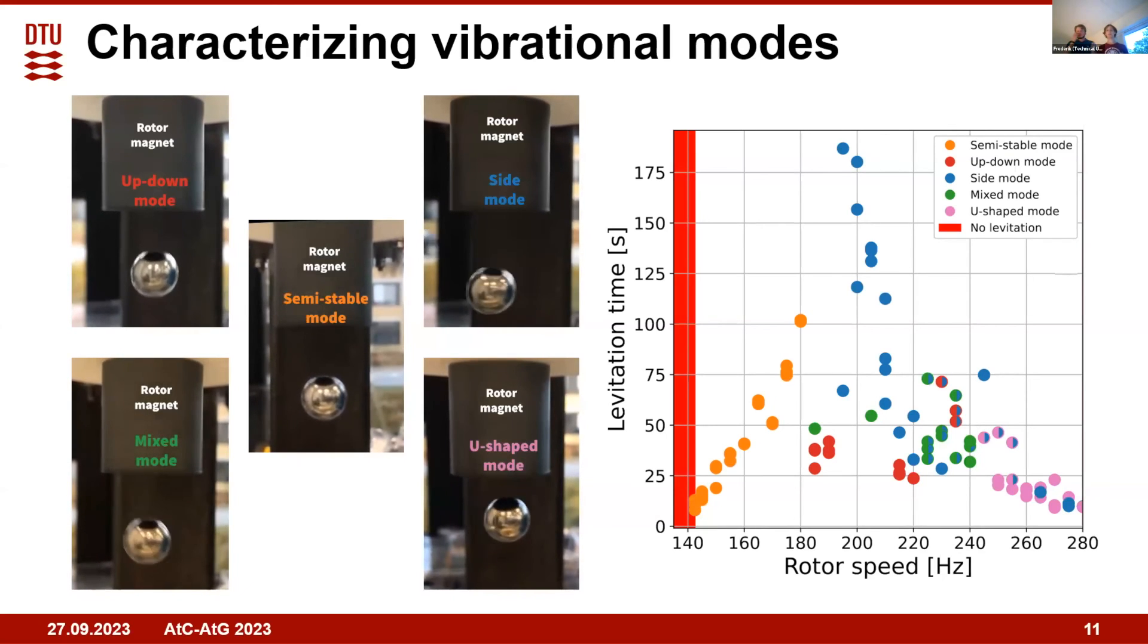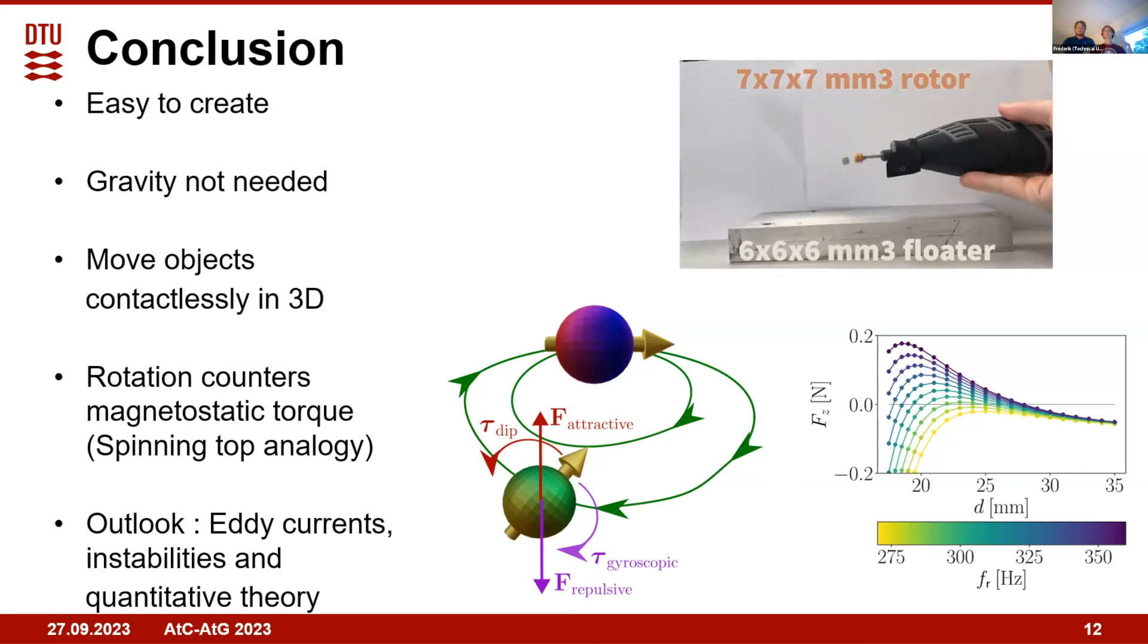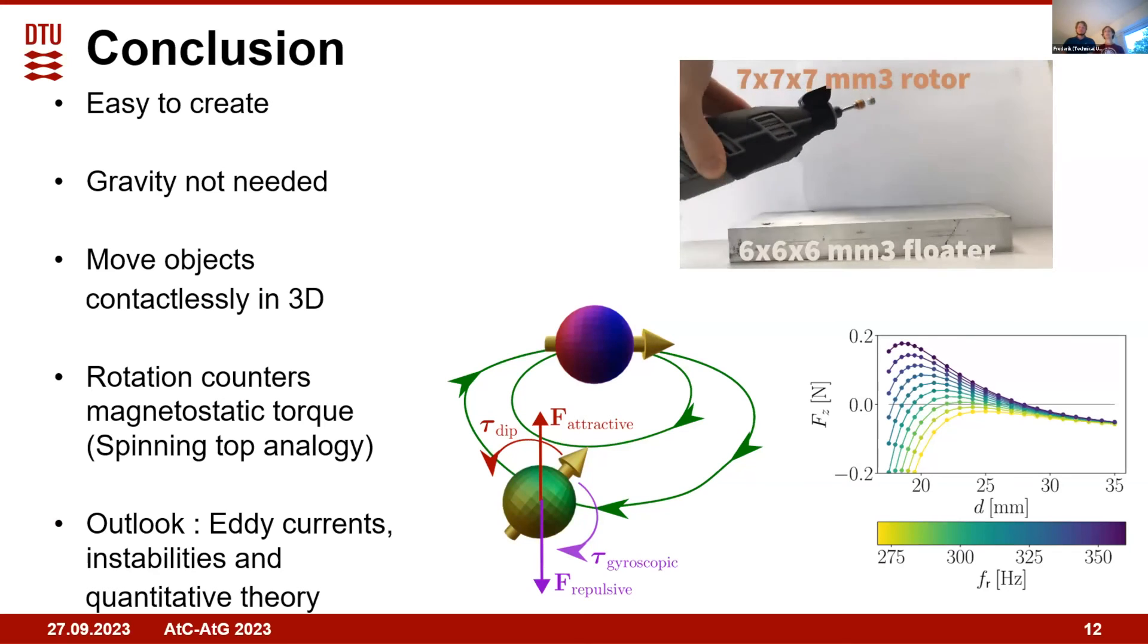So in conclusion, the phenomenon is easy to create. All you need is a spinning tool and two magnets, and it doesn't require gravity, meaning that you can move the magnets in any orientation and they're contactlessly in 3D.